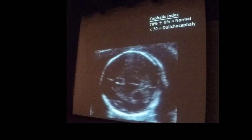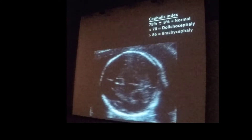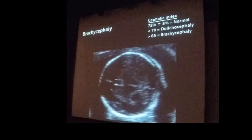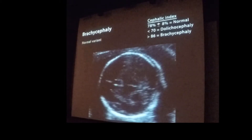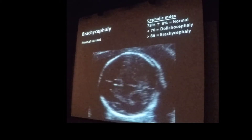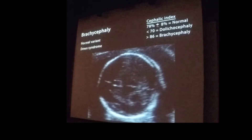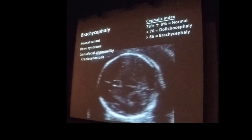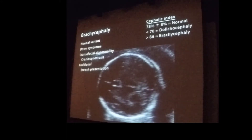A cephalic index above the normal range indicates brachycephaly, an unusually rounded head. Brachycephaly may be a normal variant; it is also common with Down syndrome and may occur secondary to a craniofacial abnormality or may be positional.